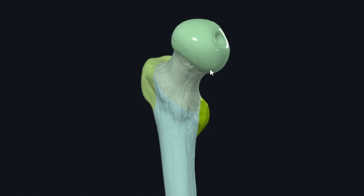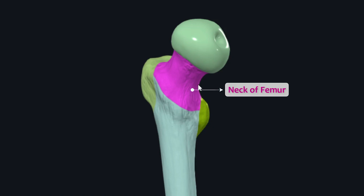Just distal to the head of the femur is the part that connects the head to the shaft — called the neck of the femur. This neck passes downward, backward, and laterally, forming an angle of about 125 degrees with the long axis of the shaft. This angle is slightly less in females, and it can be altered by different diseases of the neck of the femur.